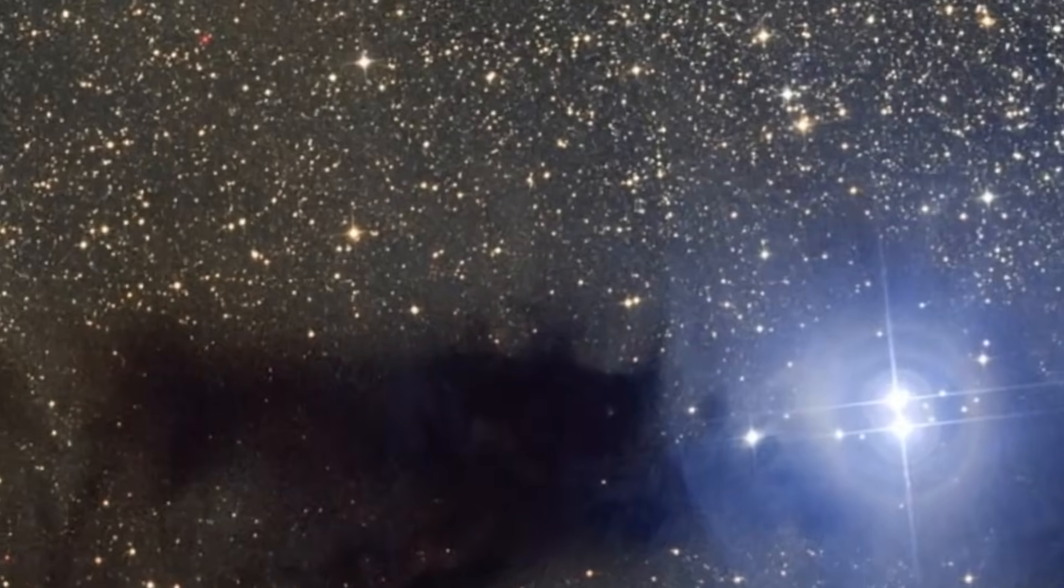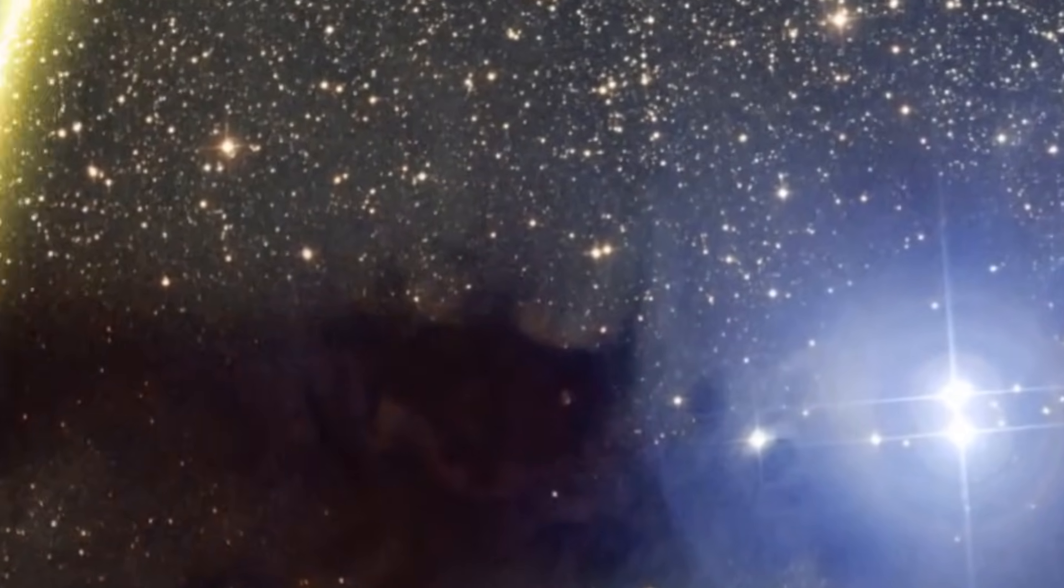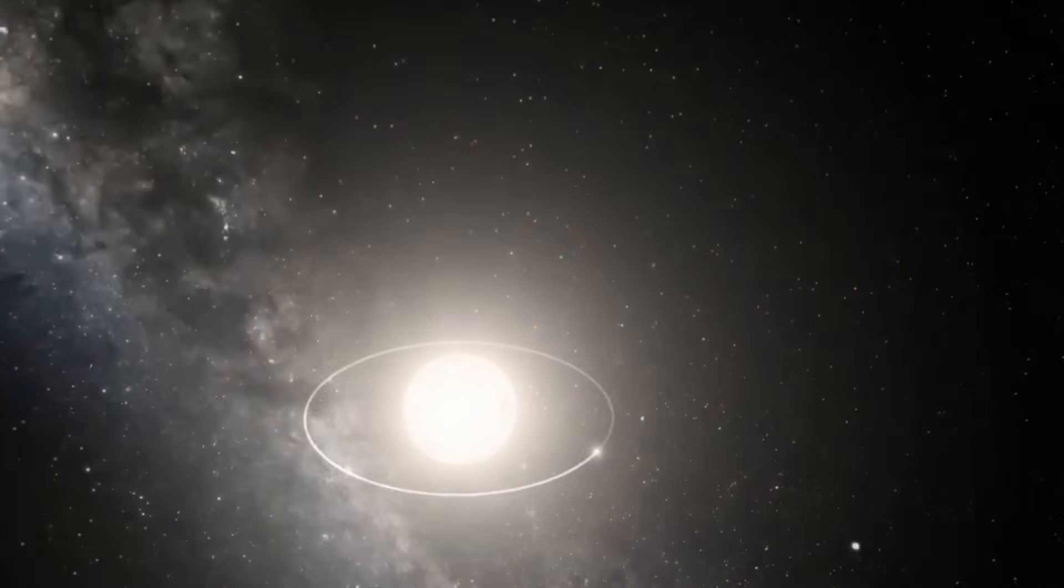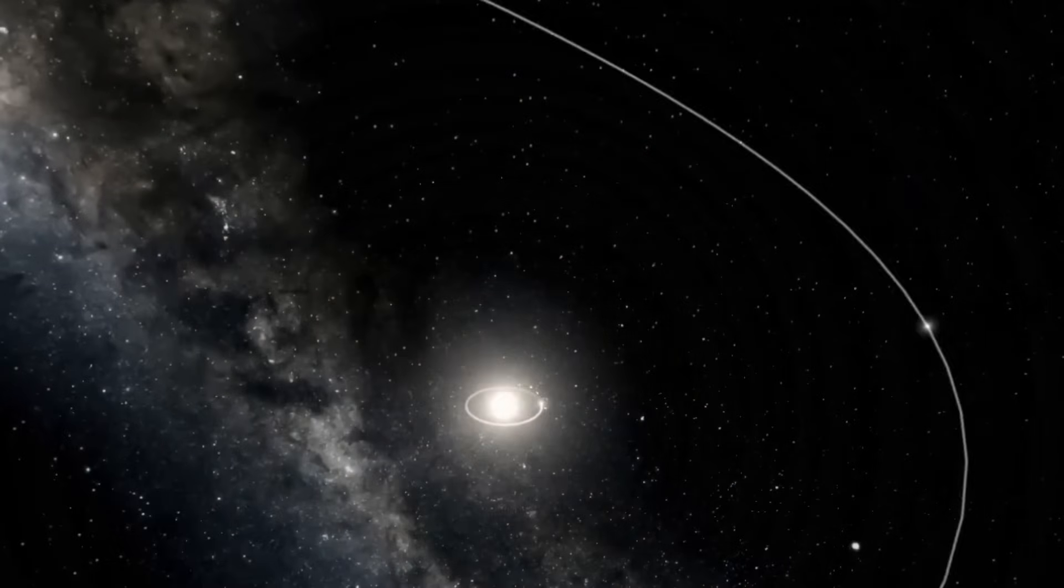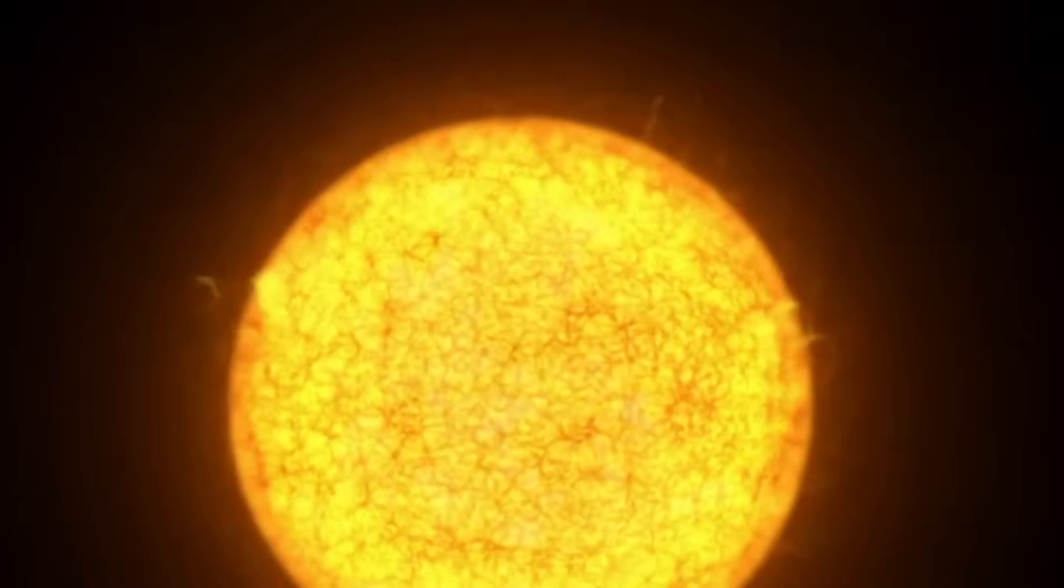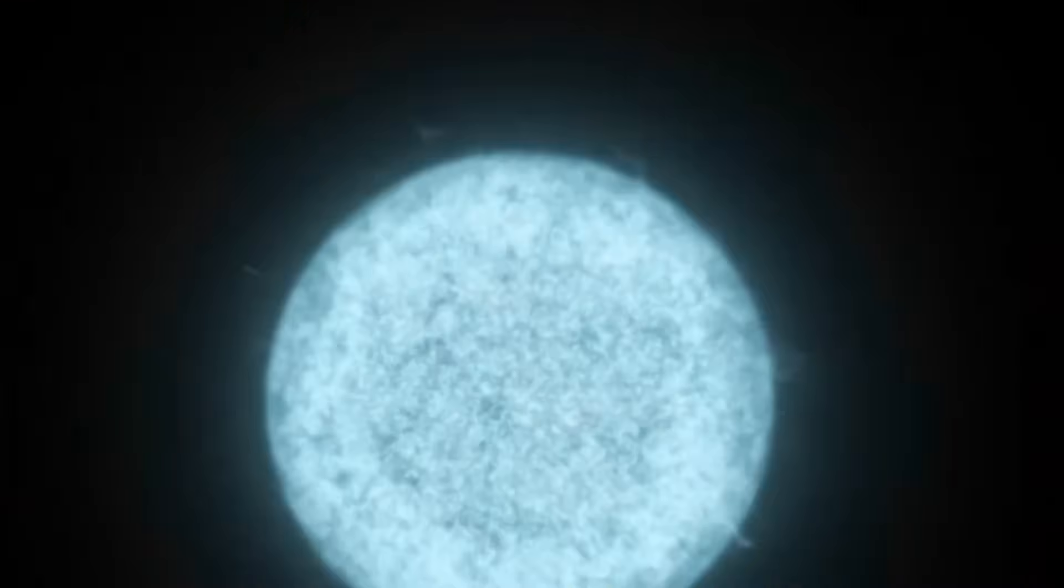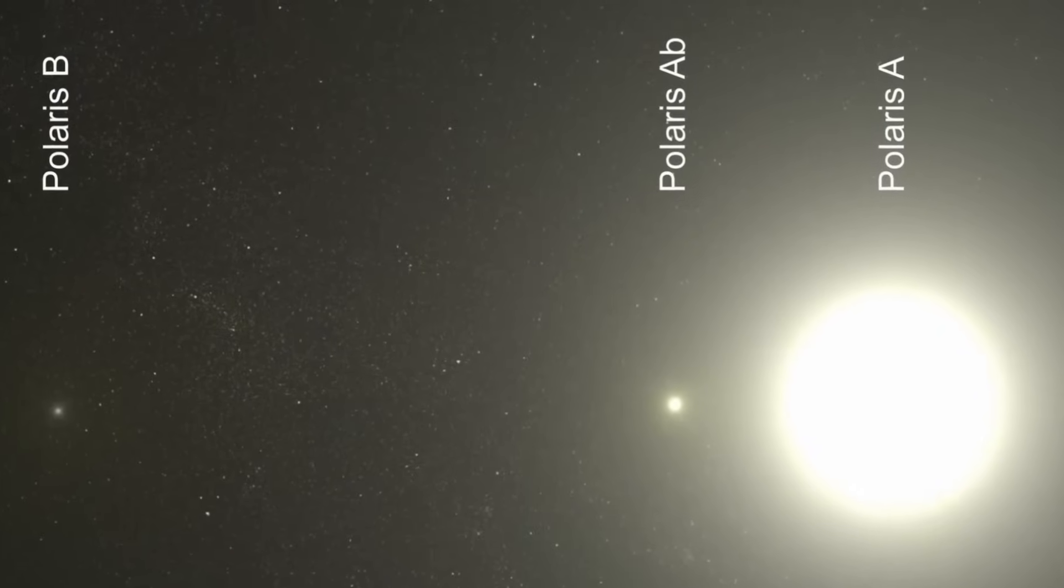In terms of size, Polaris is a yellow-white supergiant star, considerably larger and brighter than our sun, with a radius estimated to be about 40 times that of the sun. It is often perceived as a solitary star, but it is actually part of a complex triple-star system.